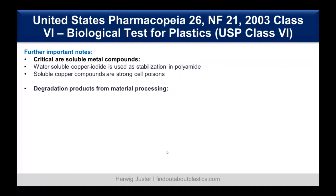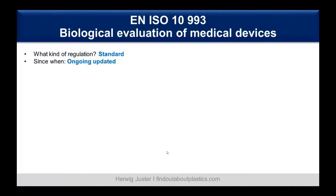Another important area is degradation products from material processing. A good example is POM: when using too high temperatures, the degrading material can form formaldehyde, which is again a cell poison. The same is valid with acetate polymers, where acetic acid is formed, and this has a negative impact on cell growth.